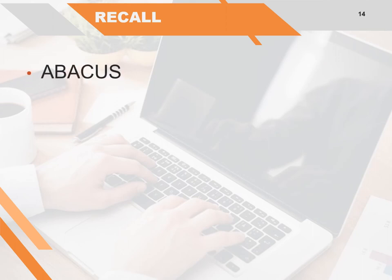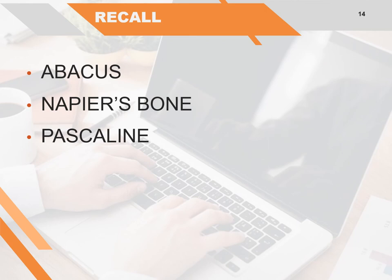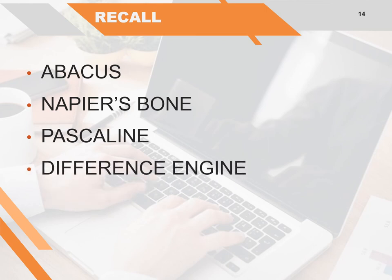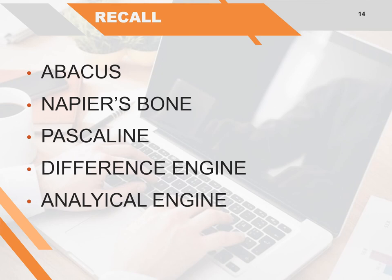Let's recall what we learned in today's class. The first device is Abacus — the first calculating device, used to perform addition and subtraction. Next is Napier's Bones, invented by Sir John Napier in 1616, used for addition, subtraction, multiplication and division. Then Pascaline, the first mechanical calculator, invented by Blaise Pascal in 1641, also used for all four arithmetic operations. The Difference Engine, invented by Charles Babbage in the 19th century, was the first mechanical computer. Finally, the Analytical Engine, also invented by Charles Babbage, who is the father of modern computers.